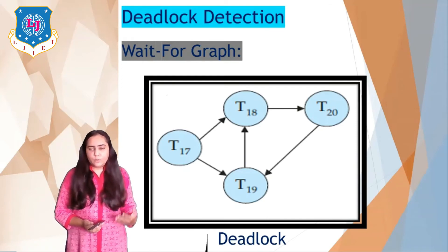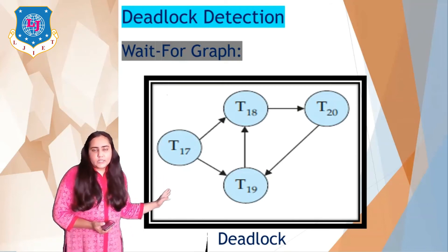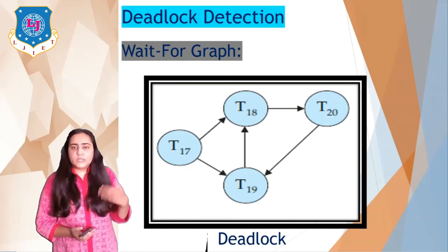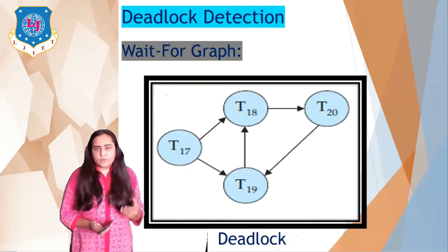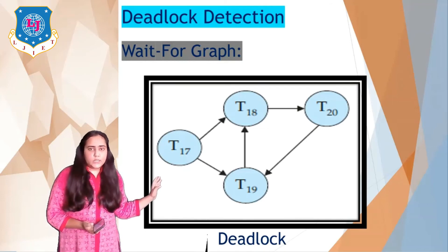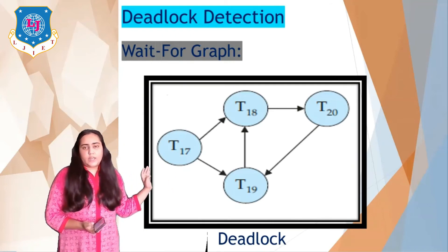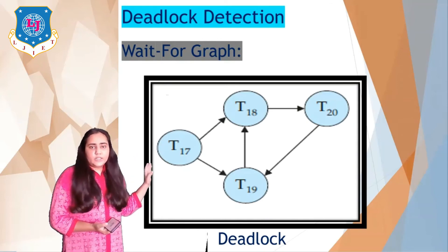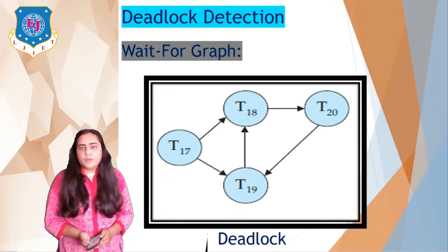In order to recover from a deadlock, we need to restart one of the transactions. For example, if we decide to stop and restart T19, T19 will release all its resources, and whichever transaction requires those resources will get them. So T18 will get the resources of T19, and T20 will also be able to get resources and finish its execution. Once T20 is over, T18 can get the resources from T20 and finish its execution as well. This is how you can resolve a deadlock.